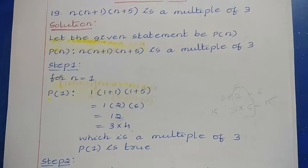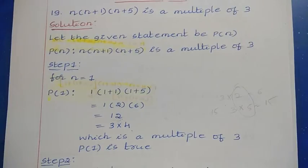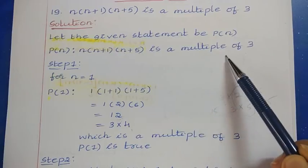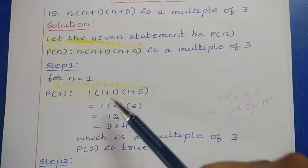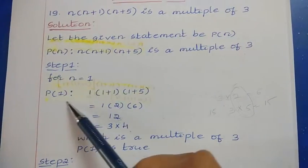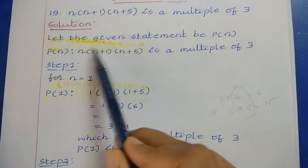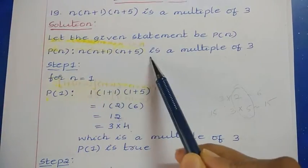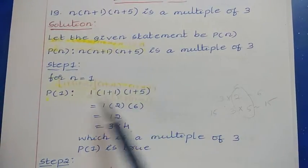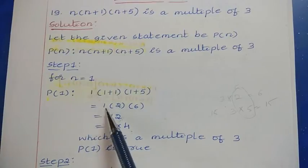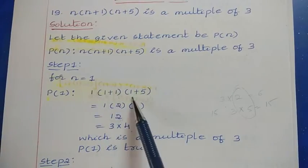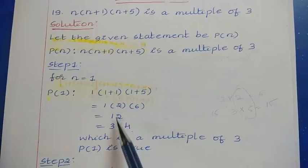Let us say that the given statement is P(n): n(n+1)(n+5) is a multiple of 3. The first step is to prove the given statement for n=1. For P(1), wherever we have n, replace it with the value 1. So we have 1 × (1+1) × (1+5) = 1 × 2 × 6 = 12.